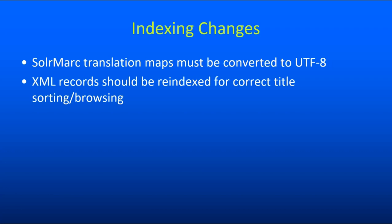Additionally, and not related to SolrMarc but related to indexing, you should re-index all of your XML records. It's particularly important to re-index XML because one of the significant bug fixes in 9.1 is that the title sort field was being populated using different normalization algorithms between SolrMarc and our XML import tool. This was resulting in problems in the alphabetical browse and some inconsistent sorting. We changed all XML import to match SolrMarc, so you need to re-index to take advantage of that. If you have custom XML imports, review the changes to title sort indexing in the main project and make sure your code matches.